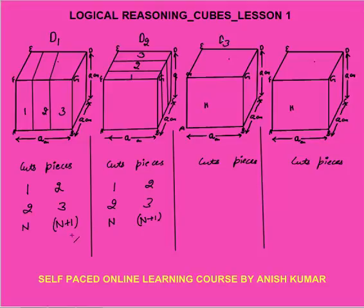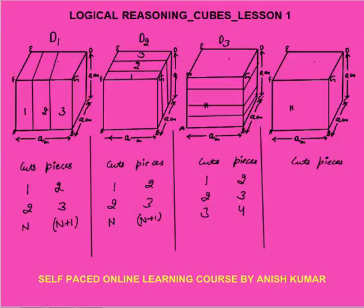The third direction is from front to back. You can cut the cube from front to back. One cut gives 2 pieces, two cuts give 3 pieces, three cuts give 4 pieces. So again n cuts gives n+1 pieces. Now if we apply these cuts simultaneously, what will happen?